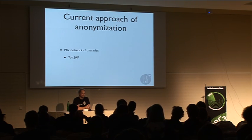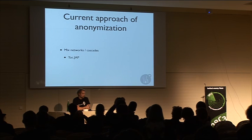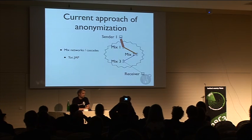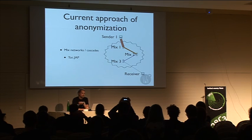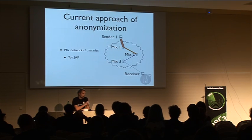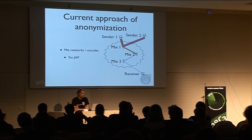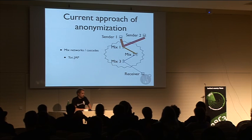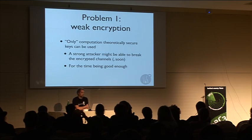When people speak about anonymization, it's most of the time mix networks or mix cascades. The two most famous representatives are Tor — the onion router — and JAP. They work on more or less the same principle: there is a network of so-called mixes. A sender can construct encrypted envelope channels through these mixes to hide who is communicating with whom. If different senders do the same, it becomes very difficult from the outside to determine who is communicating with whom.